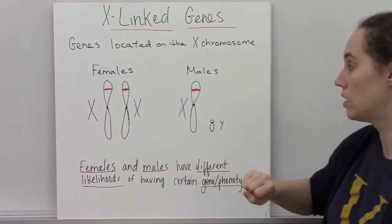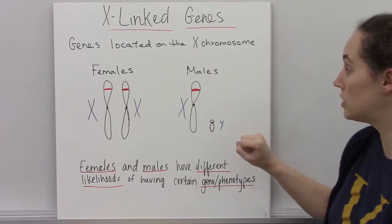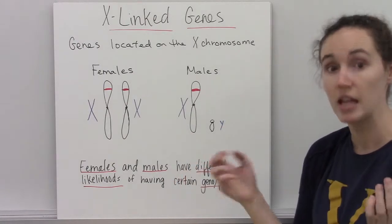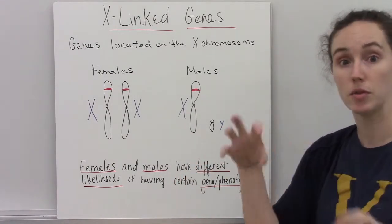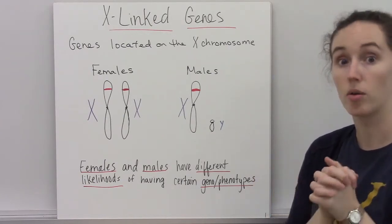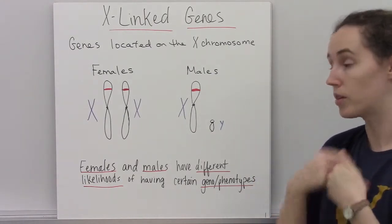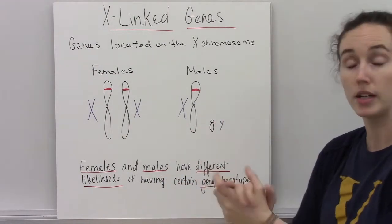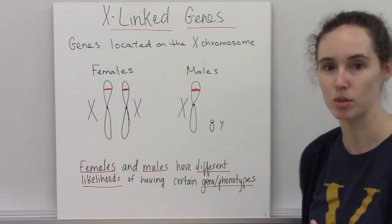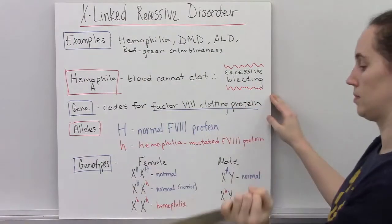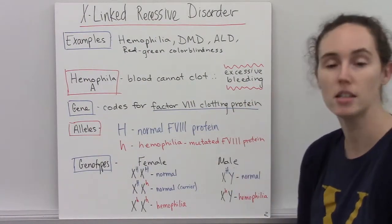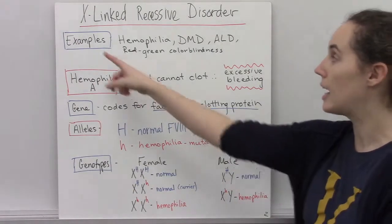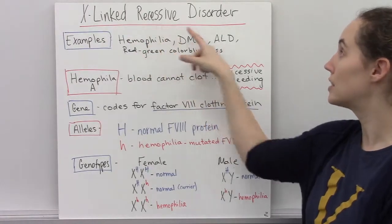Because there are different opportunities for females and males to get certain combinations of X-linked genes, when you cross males and females of different phenotypes, you're going to come out with offspring where the female and male offspring actually have different likelihoods of getting a certain phenotype or genotype. Let's look at some examples. X-linked genes can be recessive or dominant, so we're going to look at some examples of X-linked recessive disorders.